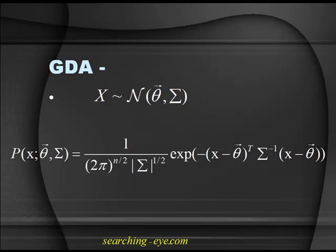In GDA, our training set is assumed to follow a normal distribution. We make the assumption that our training set belongs to a normal distribution with mean vector theta and covariance matrix Sigma. The density of the distribution of x parameterized by theta and Sigma is: 1 over (2pi)^(n/2) times determinant of Sigma to the 1/2, times exponential of negative (x minus theta) transpose Sigma inverse (x minus theta).